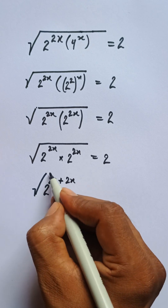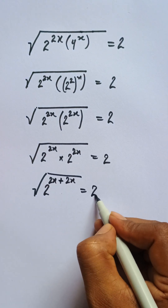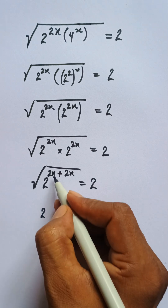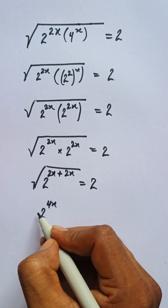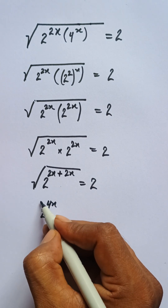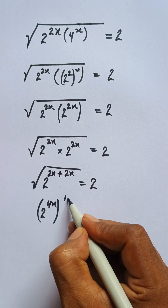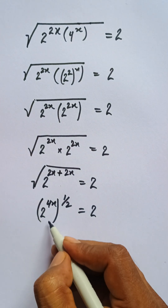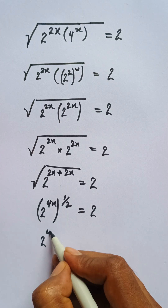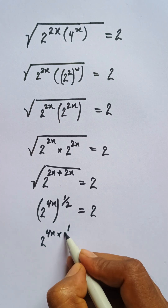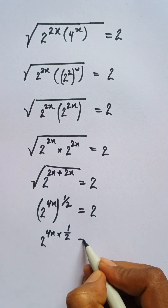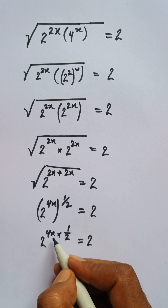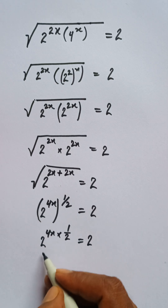We get 2 to the power 4x, and then I can write here power 1 upon 2, that is equal to 2. Now we have 2 to the power 4x multiplied by 1 upon 2 — the 4x is divided by 2, giving us 2 to the power 2x equal to 2.